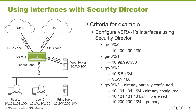GigE0/0/2 needs an IP address of 10.5.5.1/24, and we also need to apply a VLAN ID of 100 to that interface. The server will already be sending frames using VLAN ID 100, so the interface on VSRX1 also needs to be part of VLAN 100.